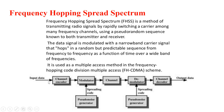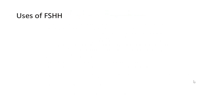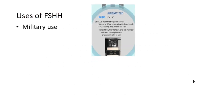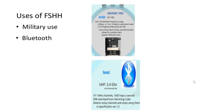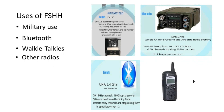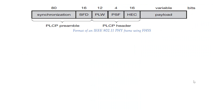Looking at the diagram: after giving input, it goes to the encoder for signal encoding. A pseudo-random noise generator generates a code, which is modulated and sent over the channel. At the receiver, the pseudo-random noise generator again provides the spreading code, demodulation happens, and the output data is recovered. Uses of frequency hopping spread spectrum include military purposes, Bluetooth, walkie-talkies, and other radios — all utilizing the FHSS principle.